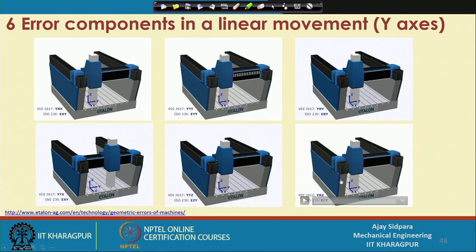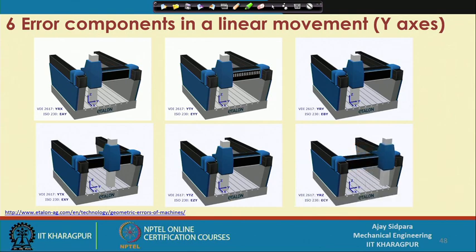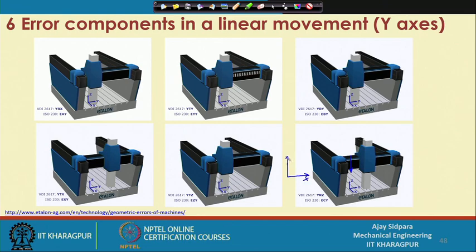The next one is motion in the y-axis but rotation around the z-axis. To see this we have to look from the top. This is the y-axis, this is the x-axis, this is the y-direction, and this is the z-axis. Your spindle is located in this direction, and then it takes this particular center and swings in two directions. So these are the linear movement or the linear error components of the y-axis motion.